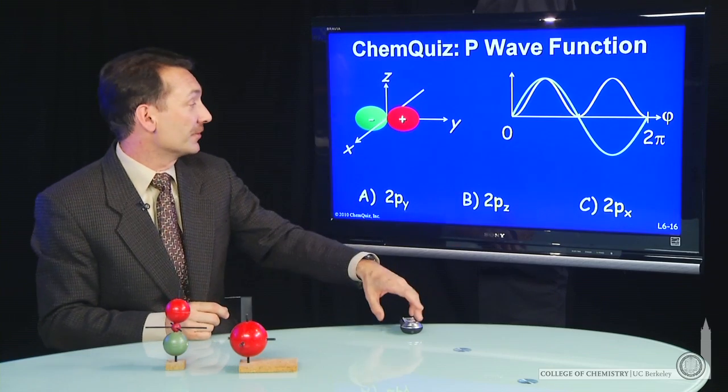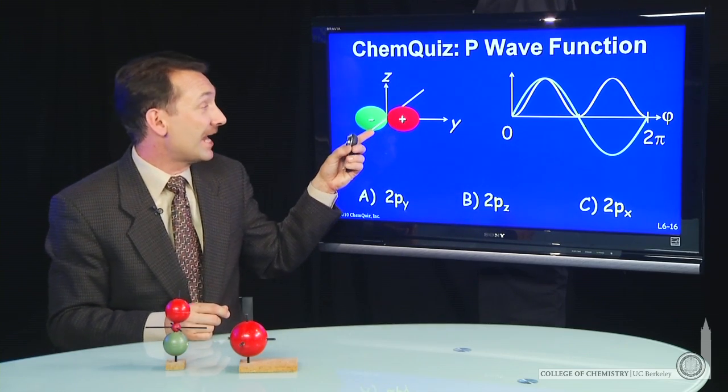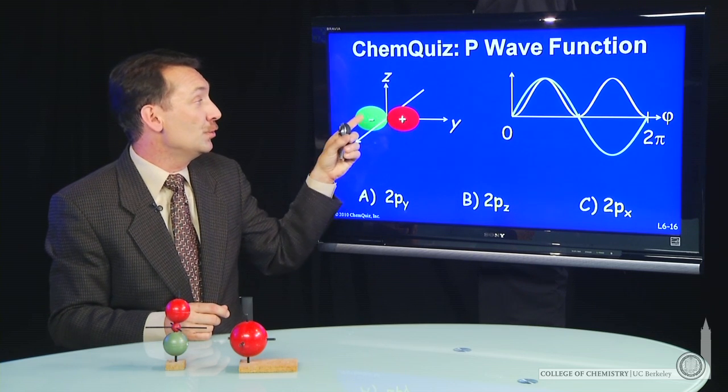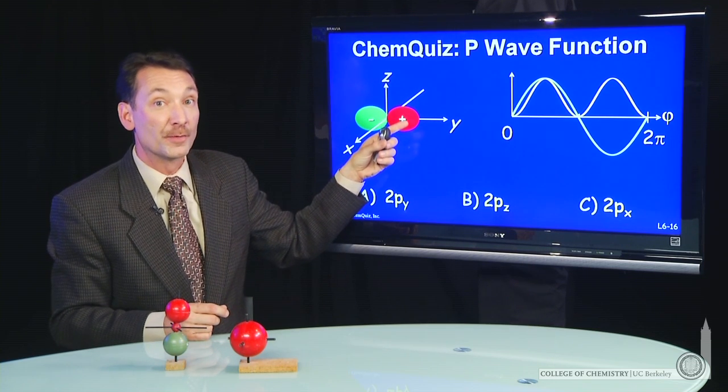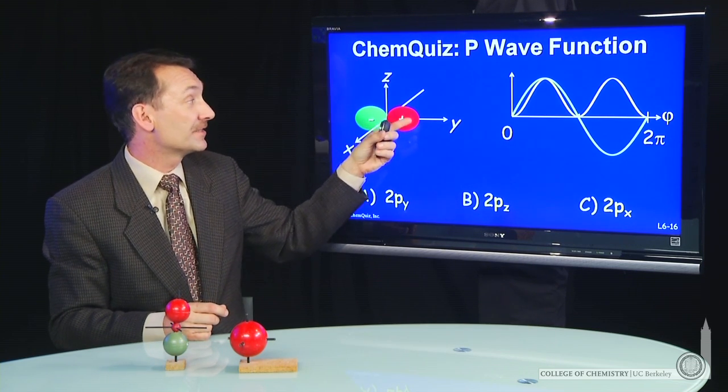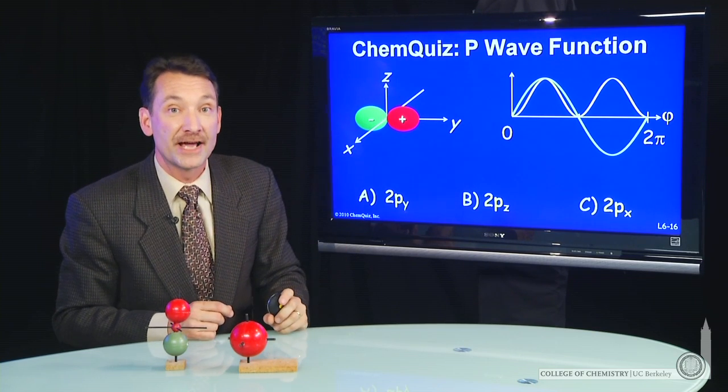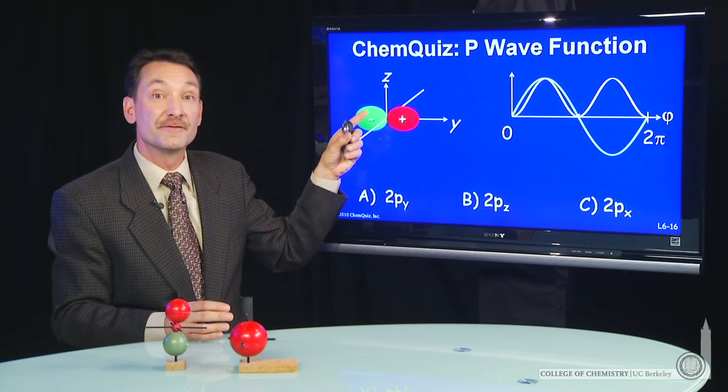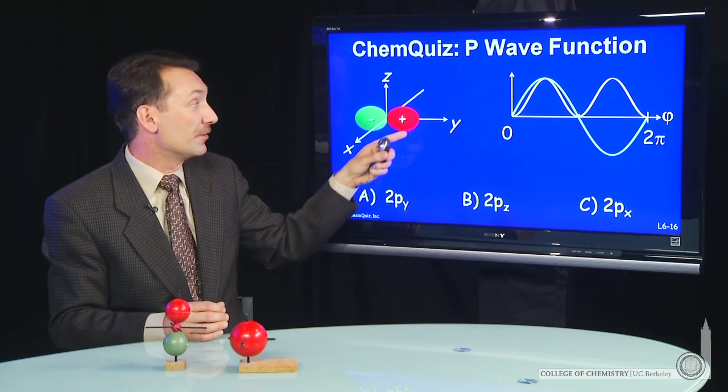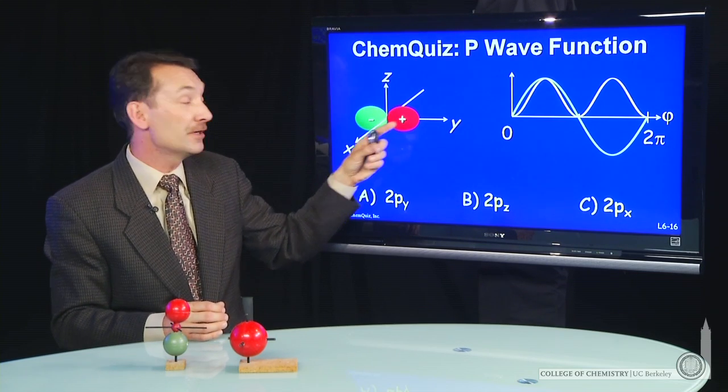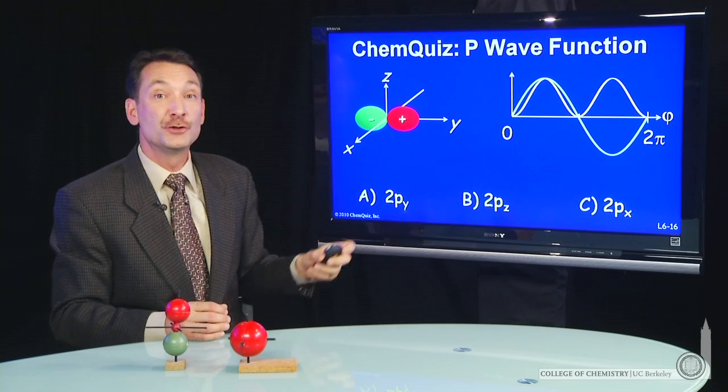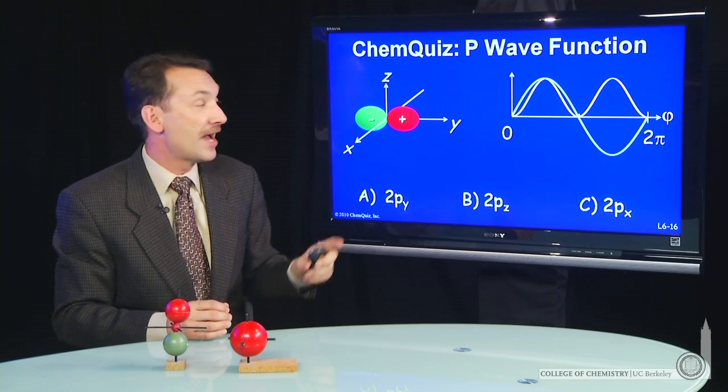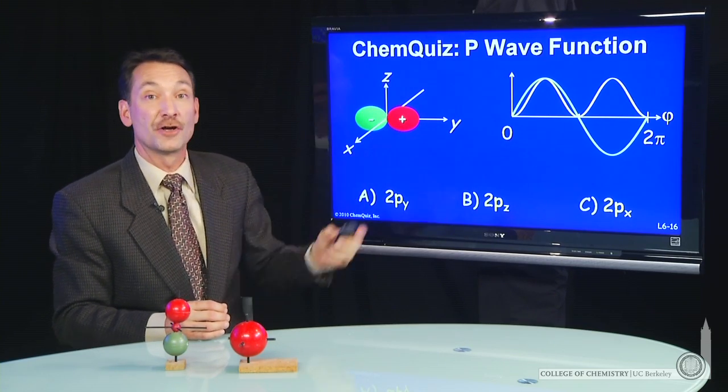So let's look at those three values. I've chosen to plot the 2py orbital here. And I know it's the 2py because the maximum occurs along the y-axis. So let's look at the wave function, which the square is kind of shown here. The wave function has positive values here, negative values here, but the two lobes have maximum values along the y-axis.